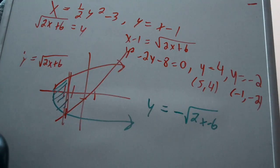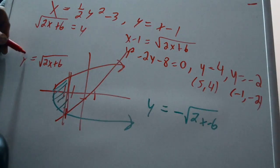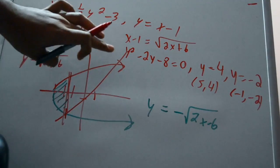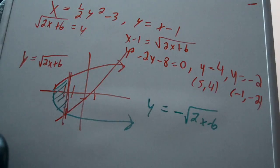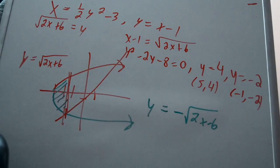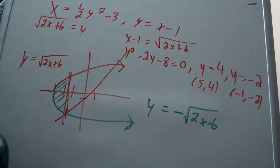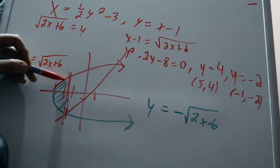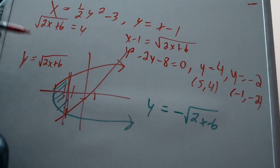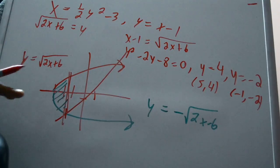We are going to use the topmost function minus the bottommost function. Using respect to y here would be easier — which I'll do in the next video — but you should know how to do it with respect to x as well. The red part (square root of 2x plus 6) is the top function, and negative square root of 2x plus 6 is the bottom.